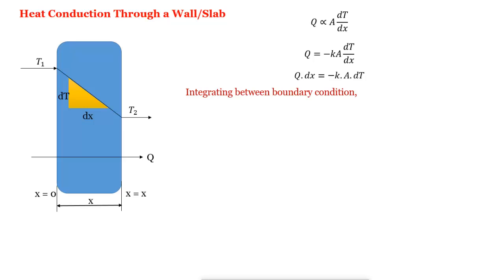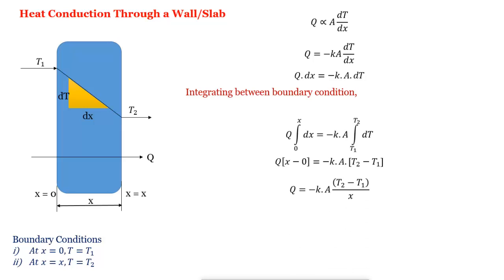Integrating between boundary conditions, the boundary conditions are at x equal to 0, T equal to T1 and x equal to x, T equal to T2. Integrating Q from 0 to x dx equal to minus k A integrating T1 to T2 dT. So this forms Q times x minus 0 equal to minus k A times T2 minus T1. So that will be Q equal to minus k A T2 minus T1. Now we move the minus sign inside that forms T1 minus T2. The equation becomes Q equal to k A T1 minus T2 upon x.